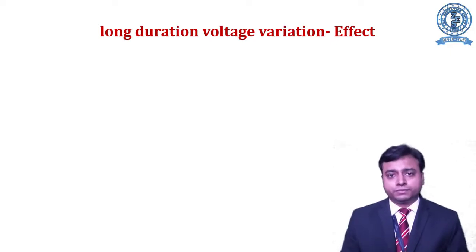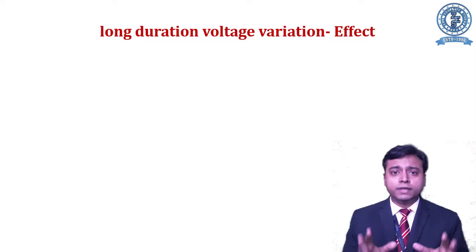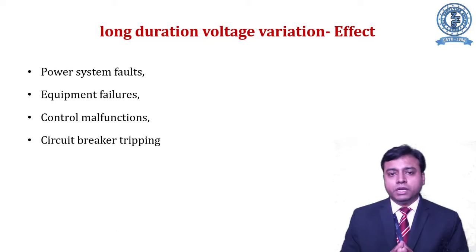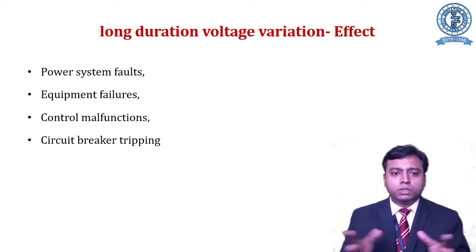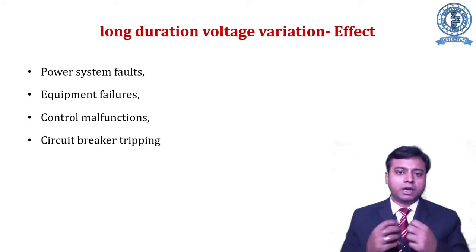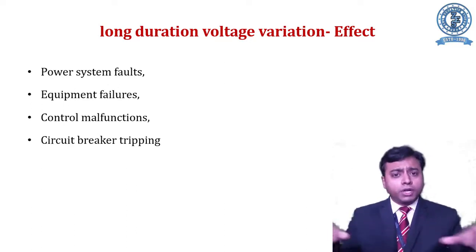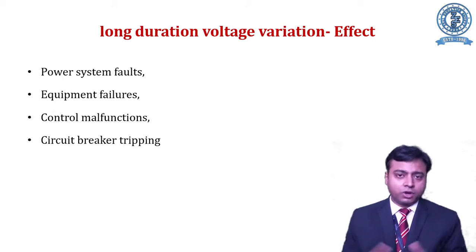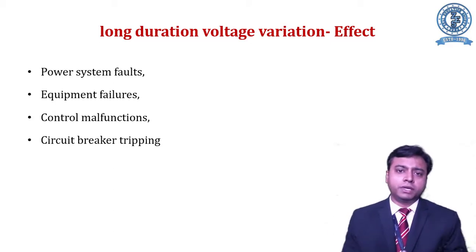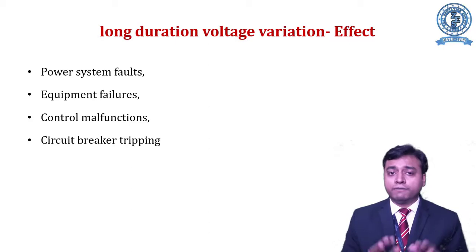What is the effect of long duration voltage variation on the system and equipment? The power system will completely fail and develop faults. Equipment connected in the power system will fail and not work properly. Control strategies applied to the system will not function correctly, causing the system to operate in an unintended manner. All protective equipment like circuit breakers and relays will trip — they will not trip at the right moment, resulting in false tripping due to the voltage variations.